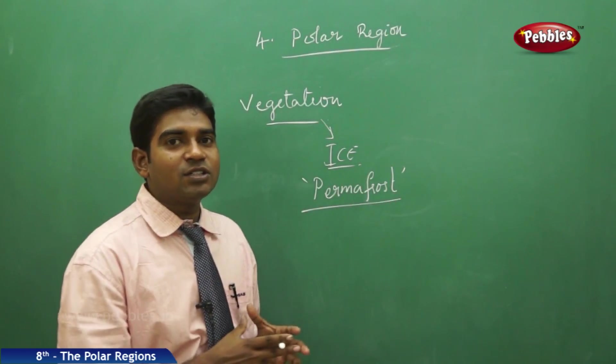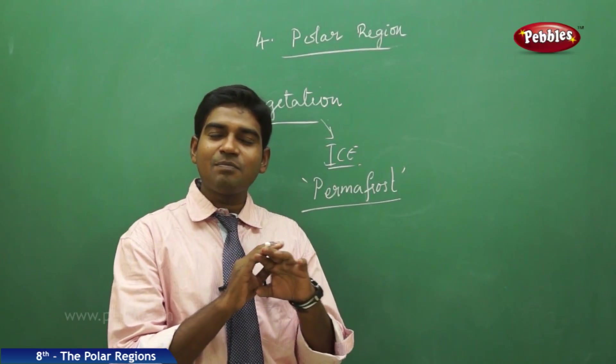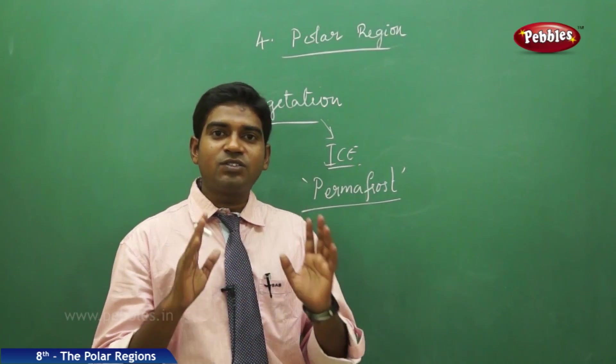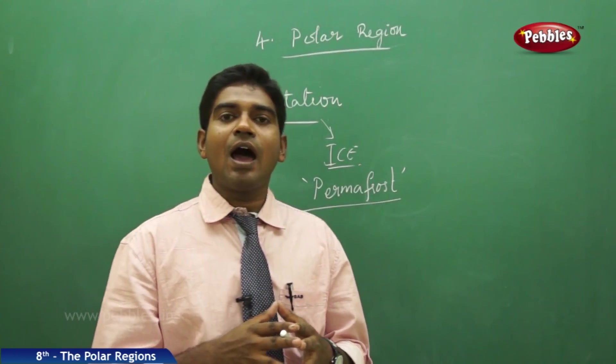Now in the climatic condition where the temperatures are completely zero level and the land is completely covered with ice, we can't expect a tree to grow here. This is the reason why most of the tundra regions are treeless.